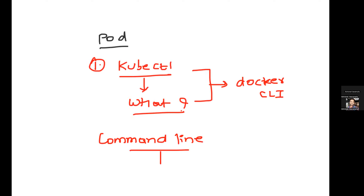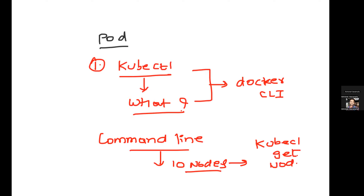Let's say you have a Kubernetes cluster with 10 nodes. To understand how many nodes are there, you just use: kubectl get nodes. If you want to see how many pods there are: kubectl get pods. If you want to see deployments: kubectl get deployment. If you want to delete or create a deployment, kubectl handles all of that interaction with Kubernetes.